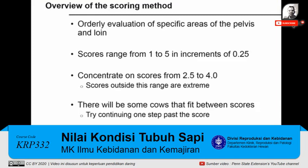Scores range from 1 to 5 in increments of 0.25. The amount of body fat increases as you move up the scale from 1 to 5. This system concentrates on accurately assigning scores from 2.5 to 4.0.